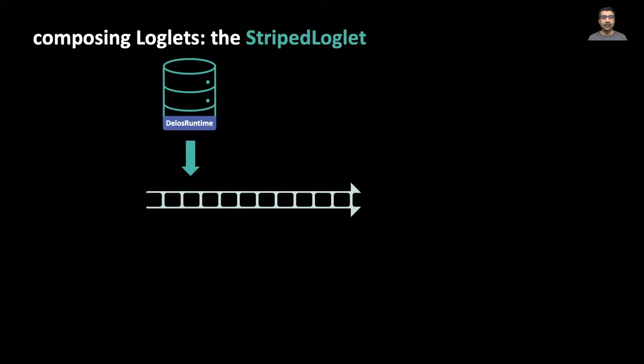Virtualizing the log API also enables RAID-like composition of logs. A striped loglet is a particular loglet implementation which is composed of other underlying loglets. When a client appends to the striped loglet, the append is routed round-robin to one of the underlying stripes. In this example, we see entry zero in the striped loglet go to position zero on the leftmost loglet. One goes to the middle loglet, two goes to the rightmost loglet, and then three wraps around to the leftmost loglet.